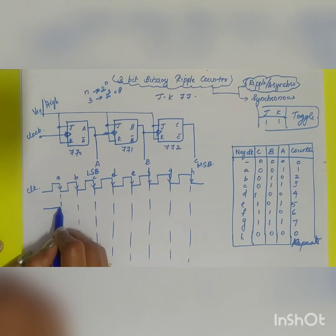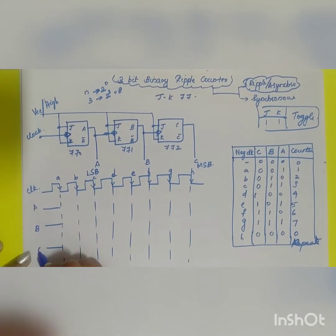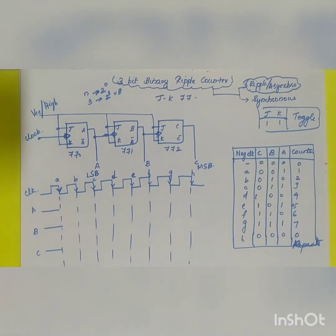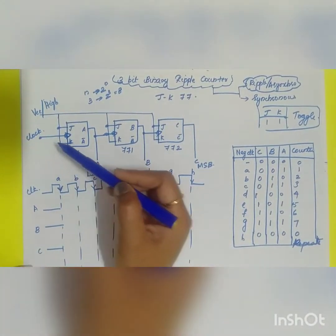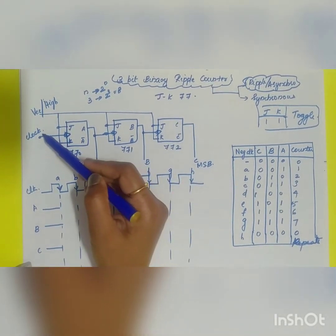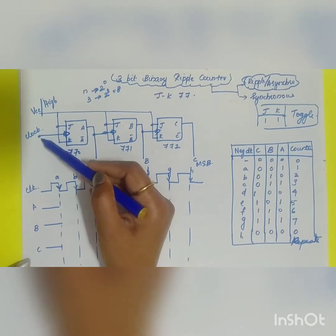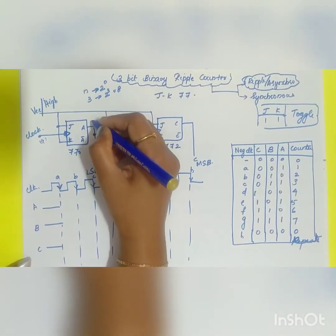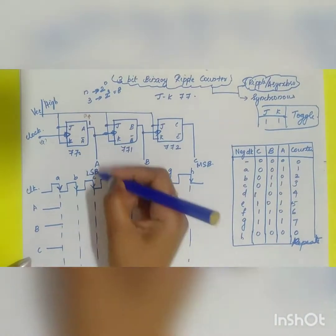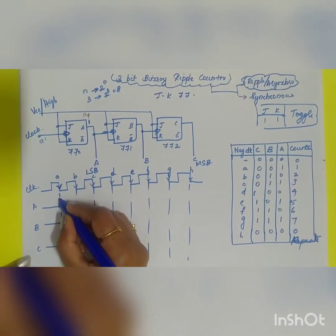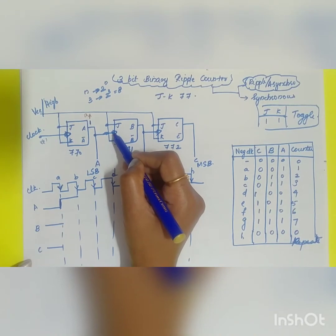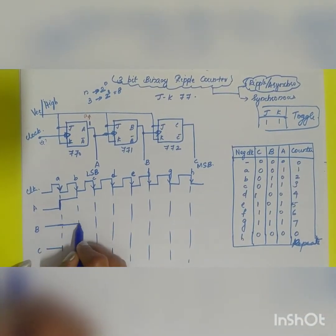Initially A = 0, B = 0, C = 0. During the first negative edge clock pulse A, flip-flop 0 (the LSB) toggles. Output A changes from 0 to 1. Since A goes to 1 (a positive transition), it does not trigger the next flip-flop. So B and C remain at 0.